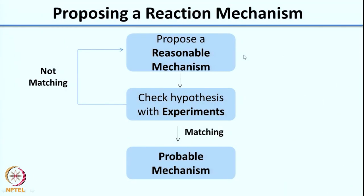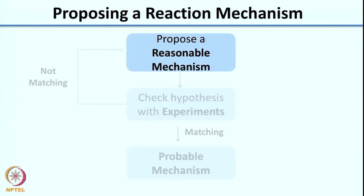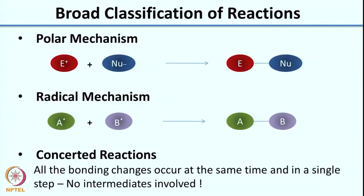With this, let us start into how you would be able to propose a reasonable mechanism and check the hypothesis with experiments. The first part is proposing a reasonable mechanism. If I were to broadly classify organic reactions, what you see here is a very basic classification — it is not overly complicated and you will not see many structures here.